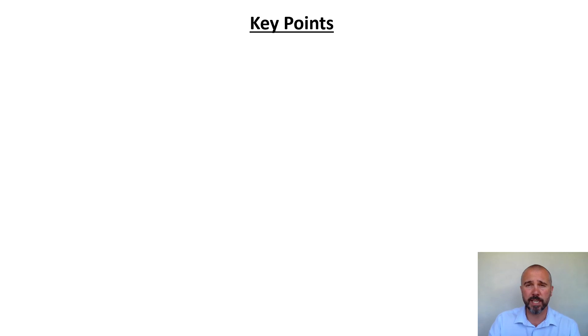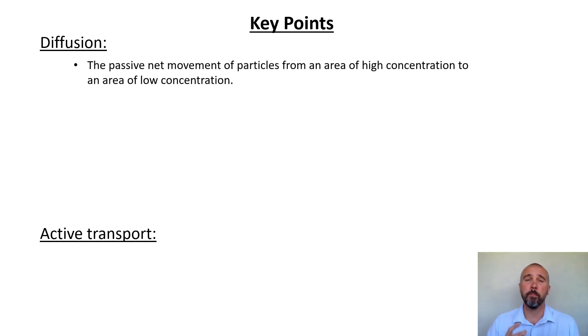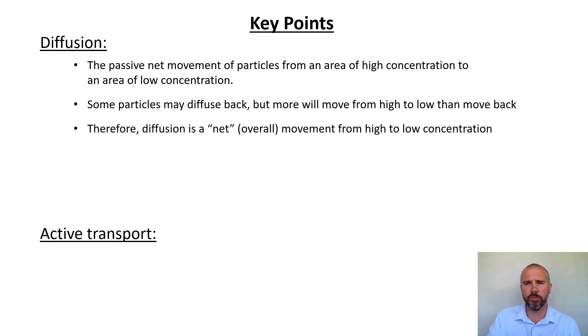So let's do a nice little overview of the key points here, just to summarize it all and give you something you can take a screenshot of. So for both diffusion and active transport, let's look at diffusion first. It's the passive, meaning doesn't require energy. We used that term a minute ago. Net movement. Net because net takes into account what comes back. So if I move three through by diffusion, but one diffused back, the overall change is two. That's the net change. The gross is that we sent out three. But because one came back, the net overall was a change of two. So it's the passive net movement of particles from an area of high concentration to an area of low concentration. That's the basic definition for diffusion. As we've just said about this net change, some particles may diffuse back, but more will move from high to low than will come back from low to high. Therefore, diffusion is net overall movement from a high to a low concentration.